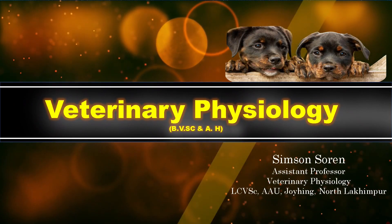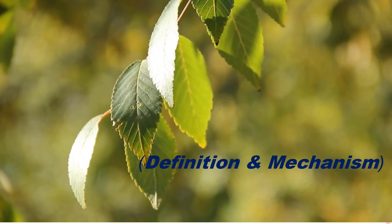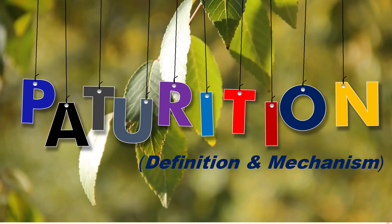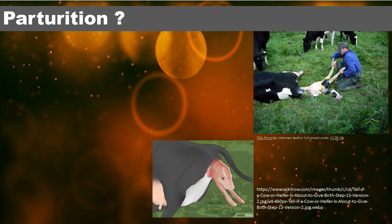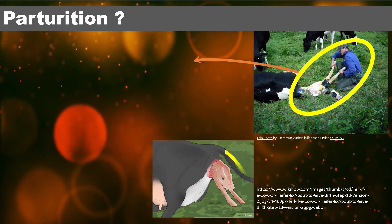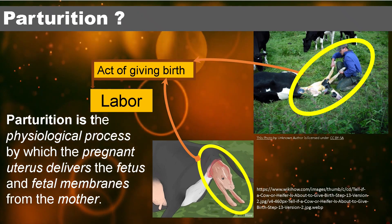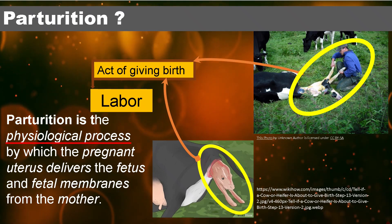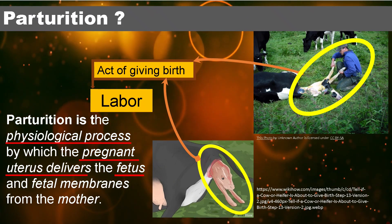Welcome to veterinary physiology lectures. I am Simpson Soren, assistant professor in veterinary physiology. Today we will learn the definition and mechanism of parturition. These two pictures show a cow giving birth — this is the act of giving birth, also referred to as labor. Parturition is the physiological process by which the pregnant uterus delivers the fetus and fetal membranes from the mother.